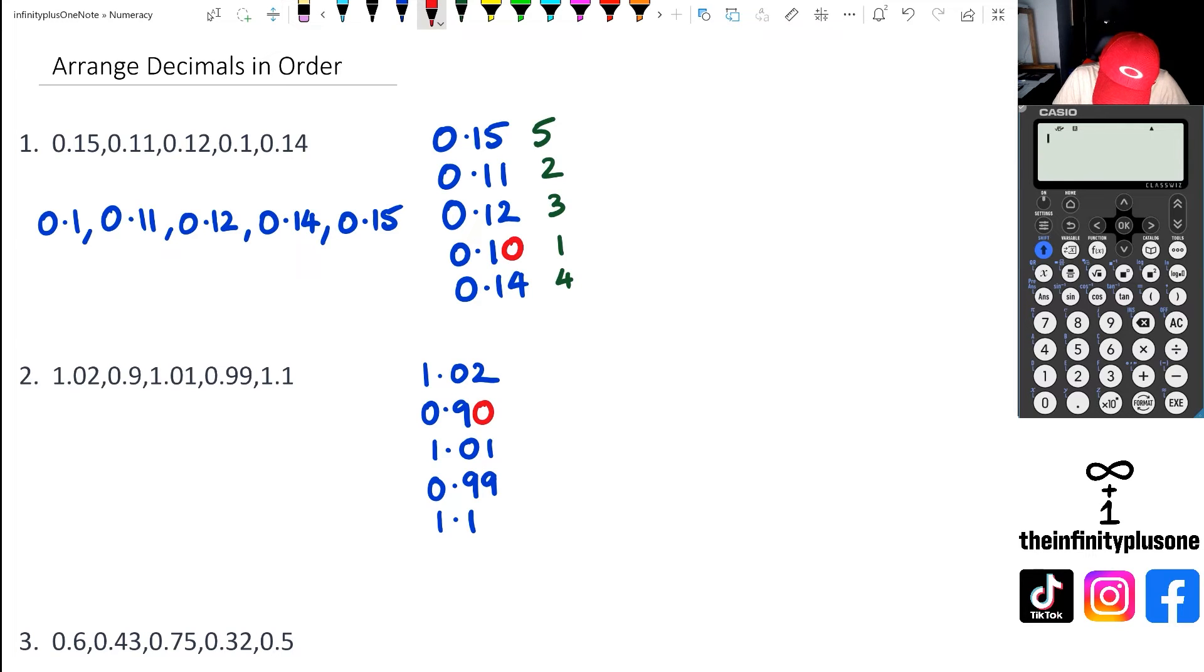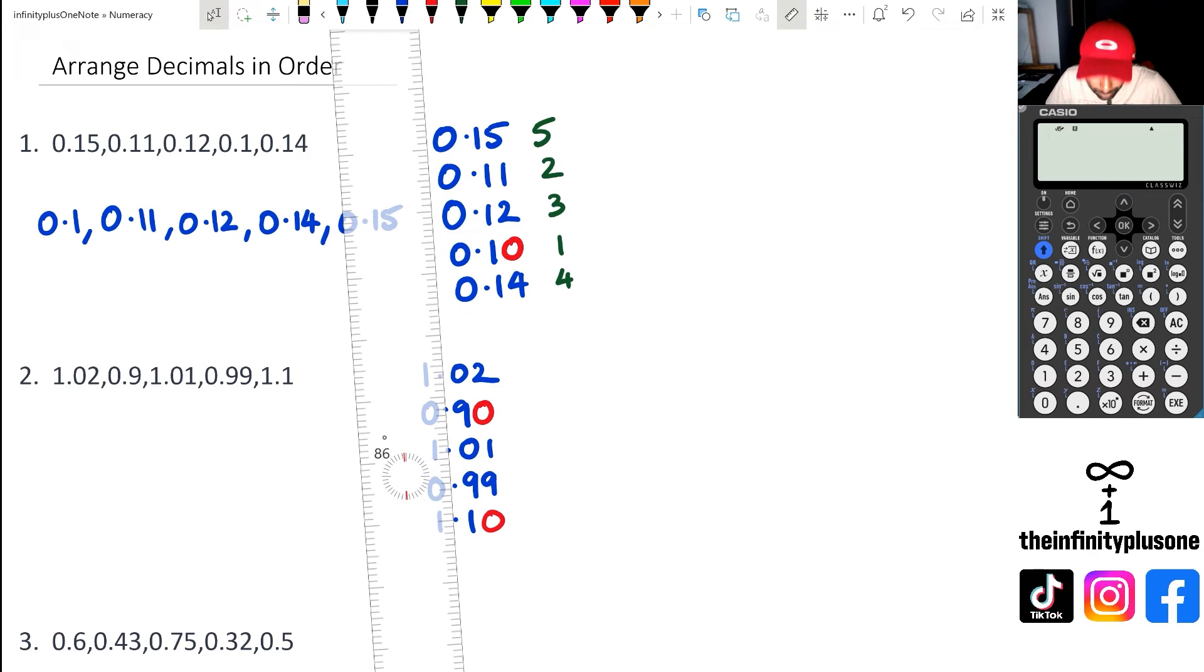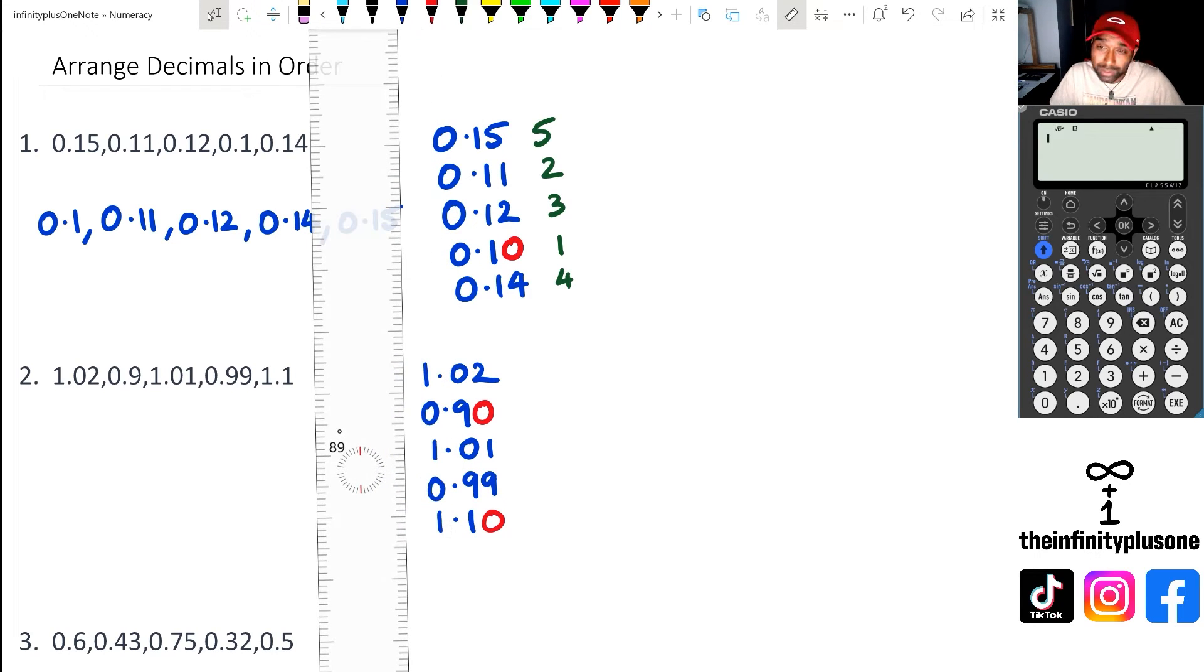And I'm going to look at this 1.1 as 1.10. Just like before, but this time I can't just ignore the numbers before the decimal point. Instead, I'm actually going to completely ignore the decimal point.